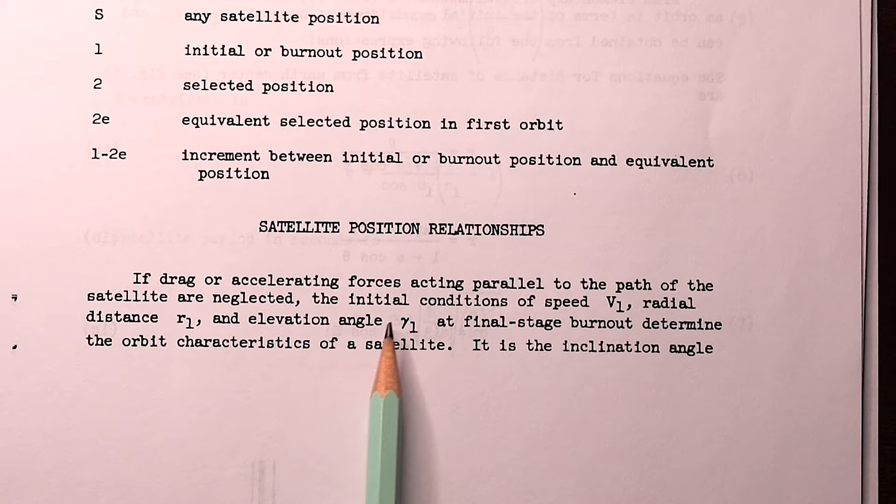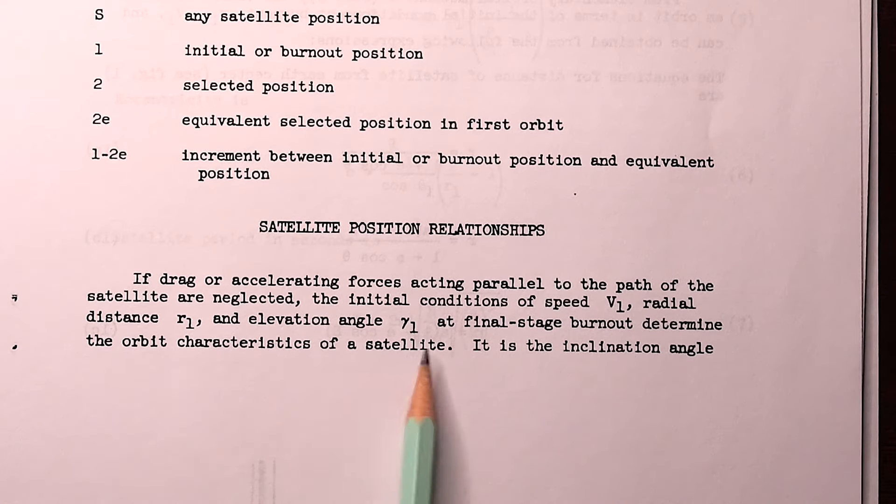It says here that if we know the initial conditions of speed, radial distance, and elevation angle at burnout, those will all determine the orbital characteristics of a satellite.